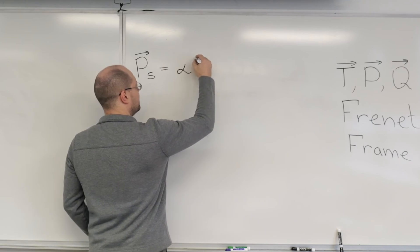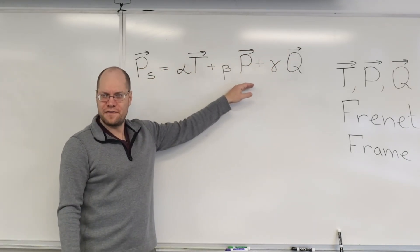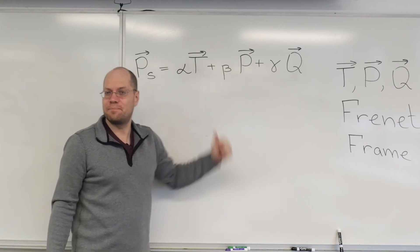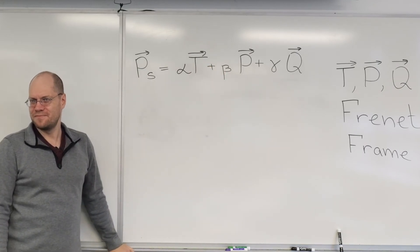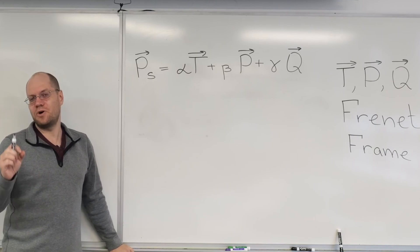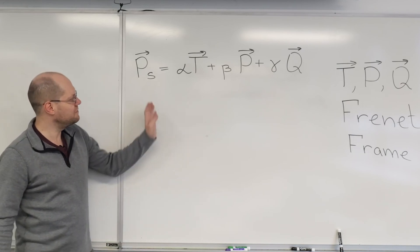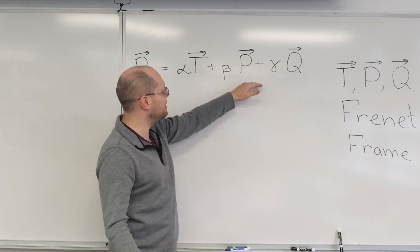So what's the best we can do right now? We can imagine that this derivative that we're interested in is a linear combination of these three vectors because any vector at that point is a linear combination of these three vectors because this is a very nice basis. It's orthonormal.